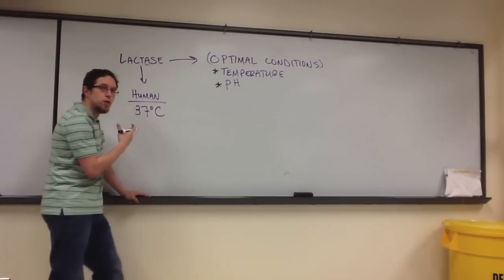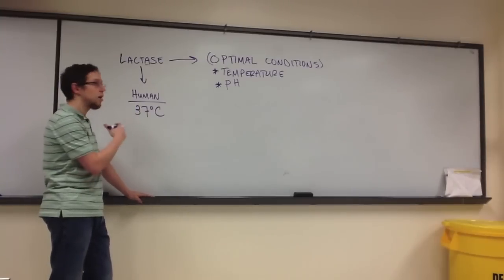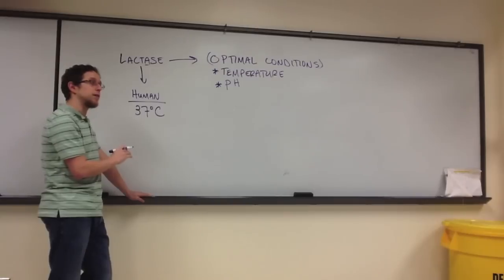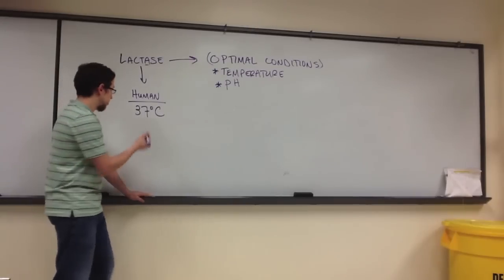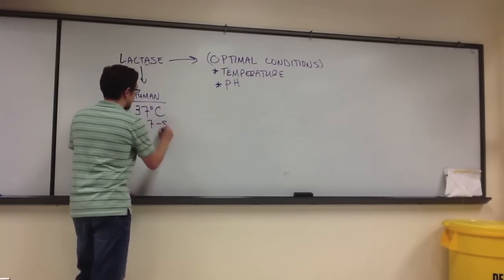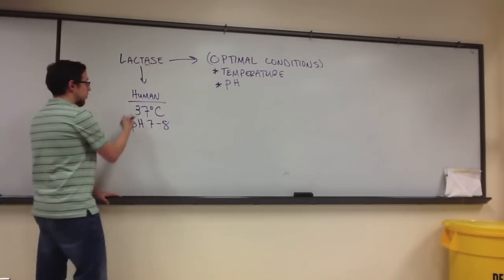And lactase is also used in the small intestine, which has an acidic pH. The small intestine has a pH that can vary, but typically it's a little above 7. So we would expect the optimal pH to be probably somewhere between 7 and 8 of this particular enzyme, if it were derived from a human being.